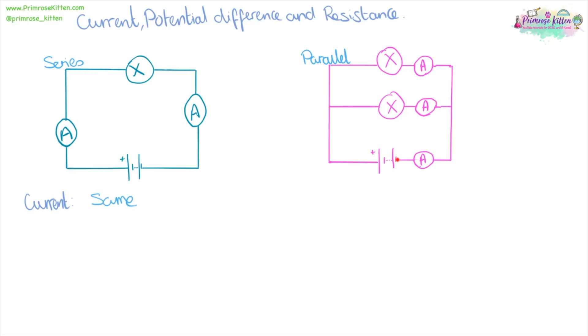However, in a parallel circuit, the current that comes out of the battery, all of this is going to pass the first ammeter. Move down here. And then when it gets to this point, it has two choices of where to go. It can go this way past this ammeter, or down here and this way past this ammeter. So the current gets split.